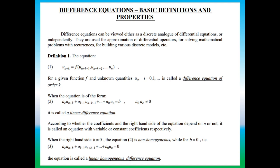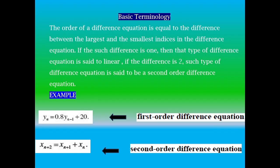We call this a difference equation of order K because to find the order, we need to find the difference between the highest order derivative and the lowest order derivative, where the derivatives are given in the suffices. The highest order is given in the format of n+k and the lowest order is given by n. The difference between these two indices gives K, which is known as the order of the difference equation. So the order of a difference equation equals the difference between the largest and smallest indices.